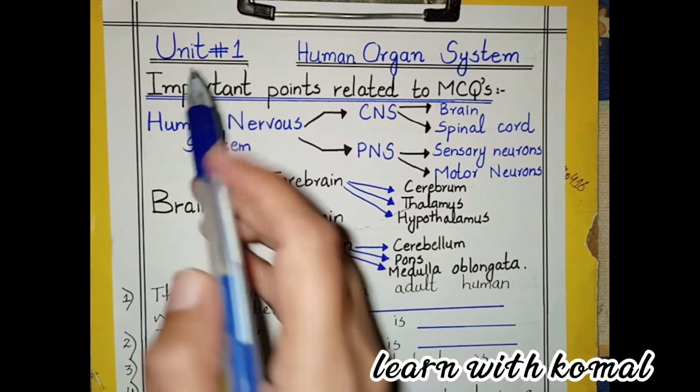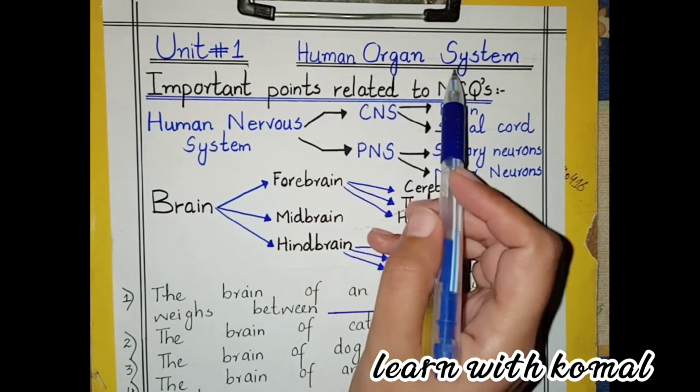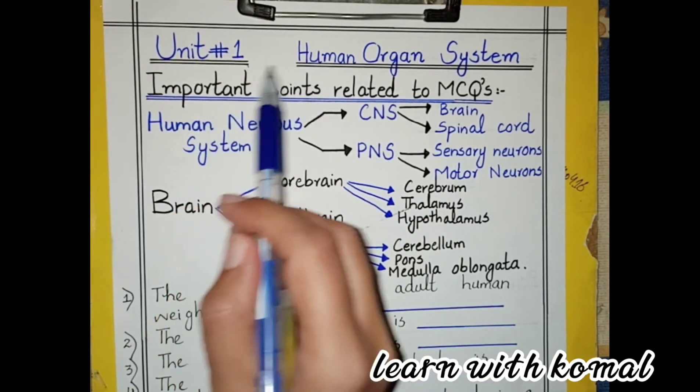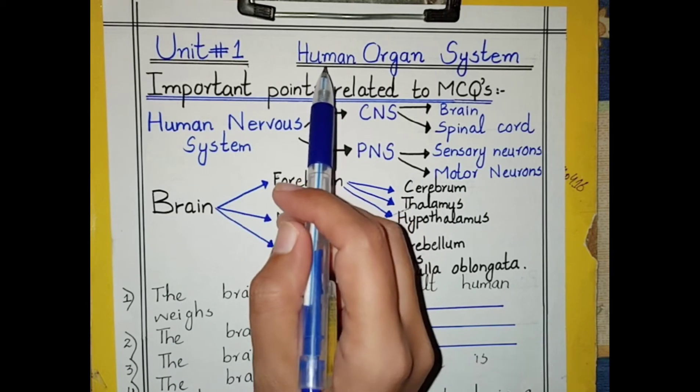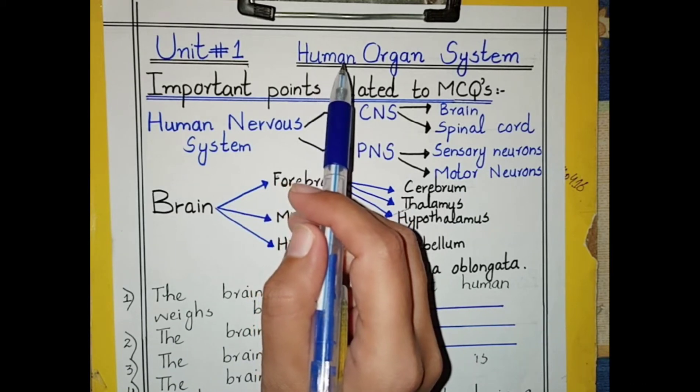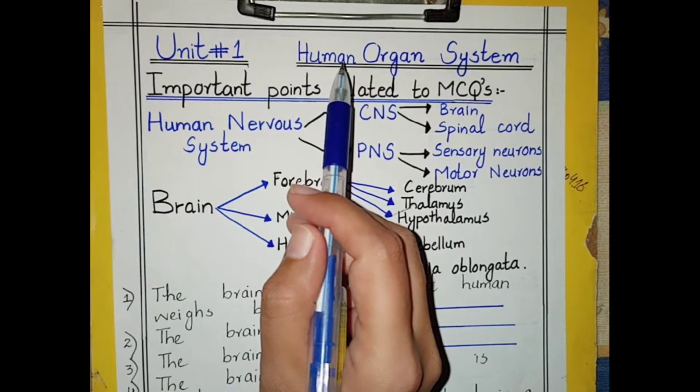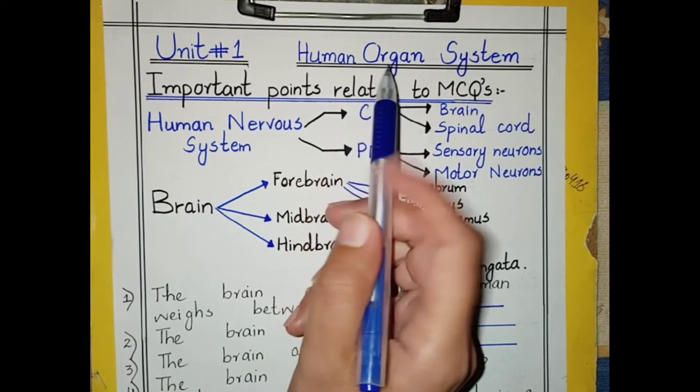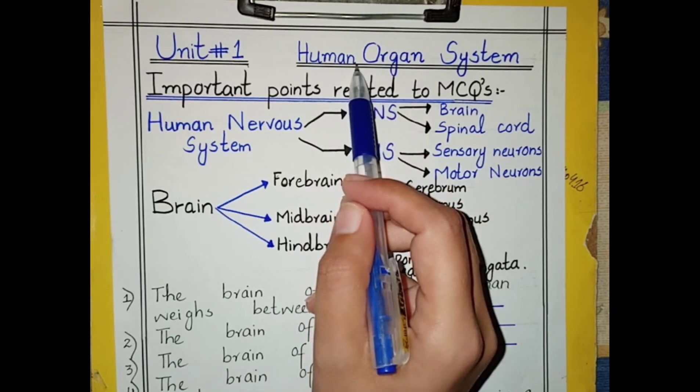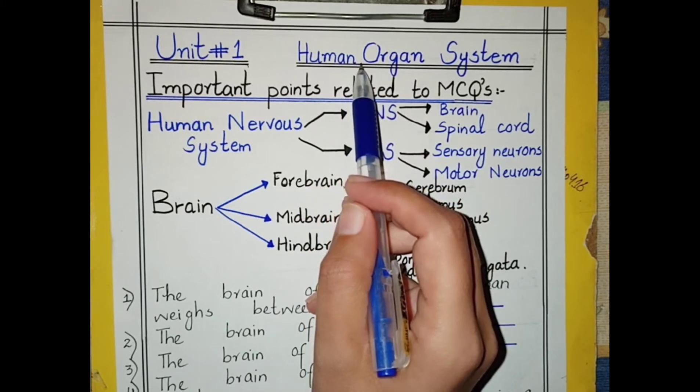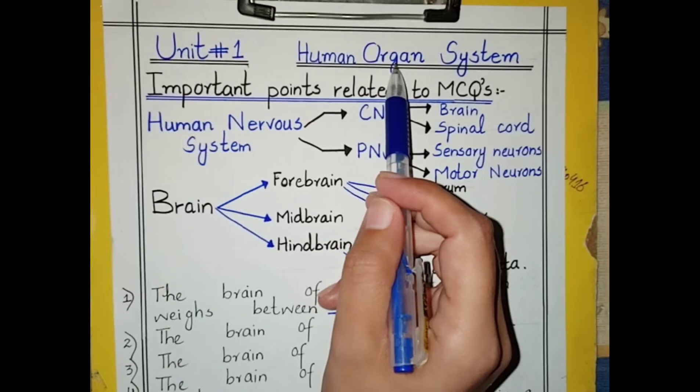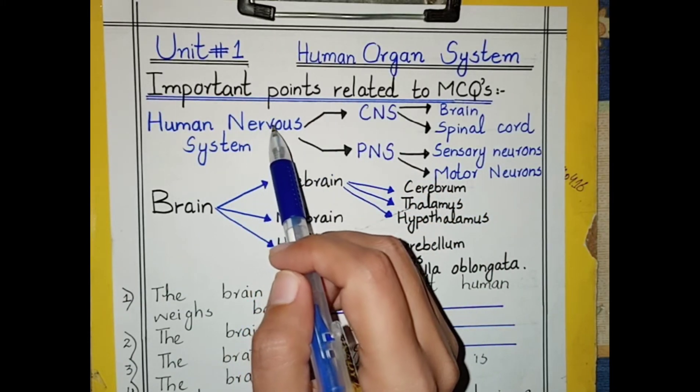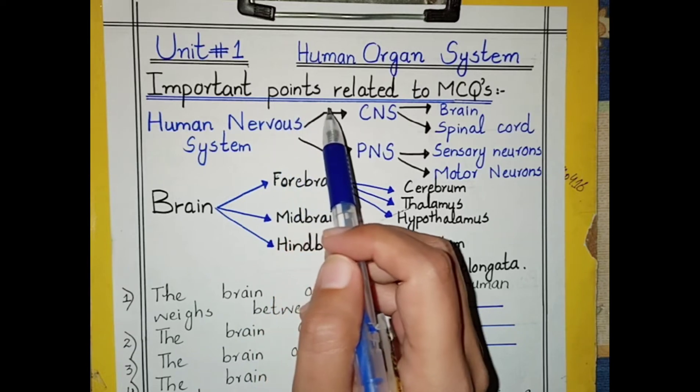Unit number one: Human Organ System. As we know, cells combine to form tissues, tissues combine to form organs, organs combine to form organ systems, and organ systems combine to form an organism. In this chapter, we will discuss two important human organ systems: the human nervous system and the human excretory system.